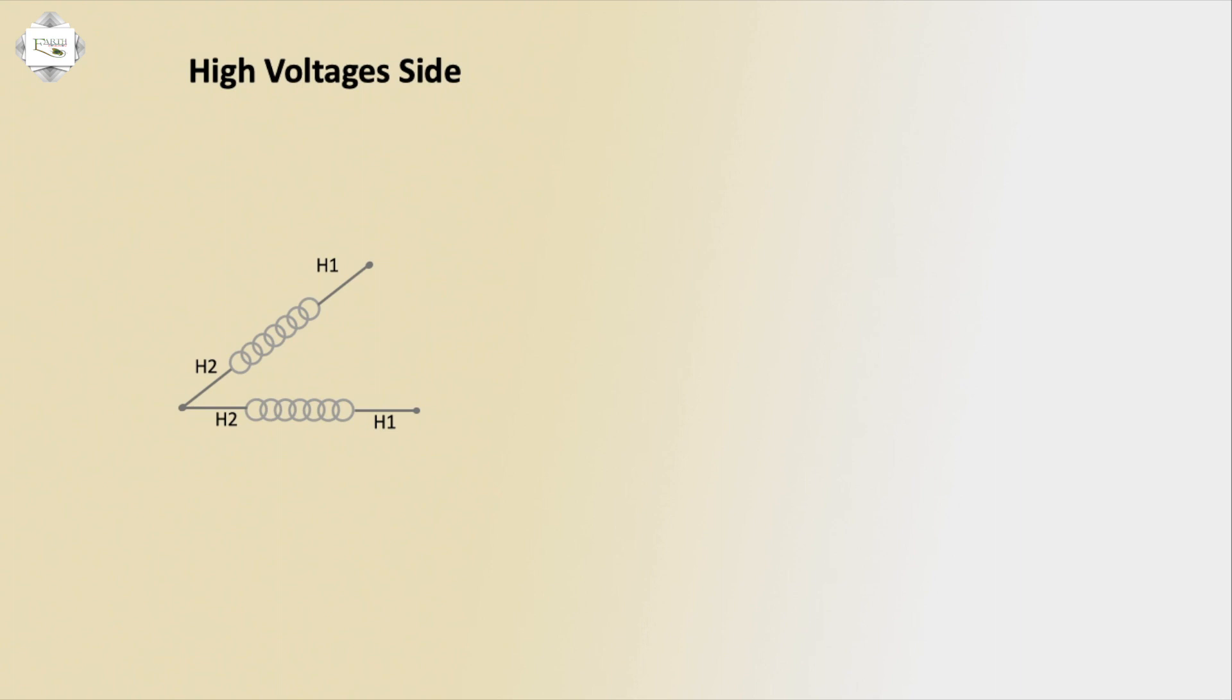Delta to delta connection open. This coil using high voltage side or first coil, terminal is red phase connection. Second coil is yellow. Third is blue.